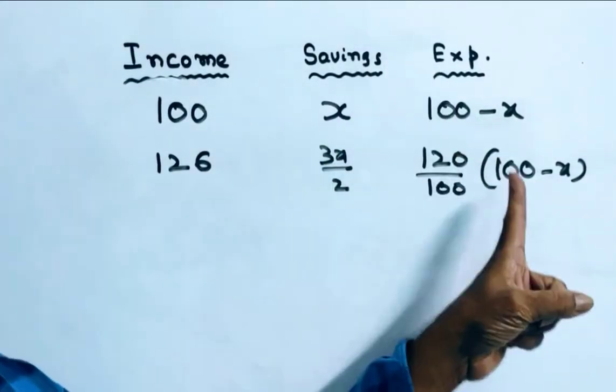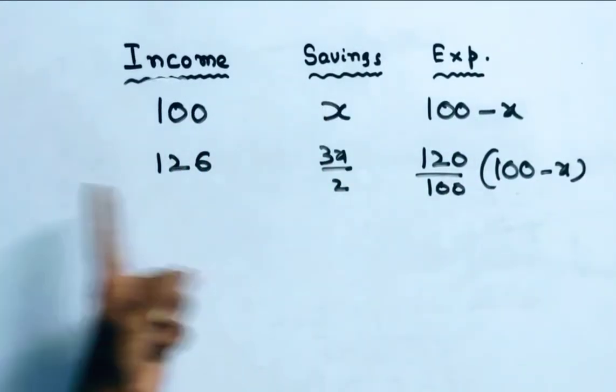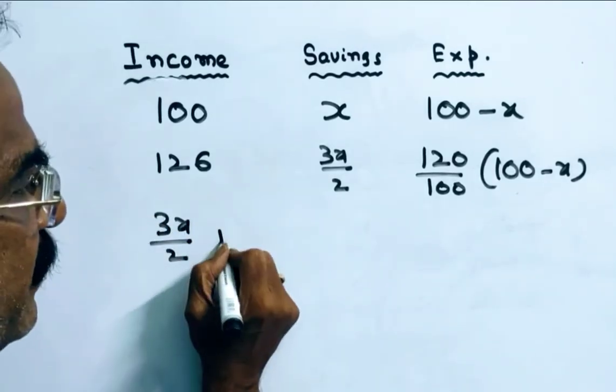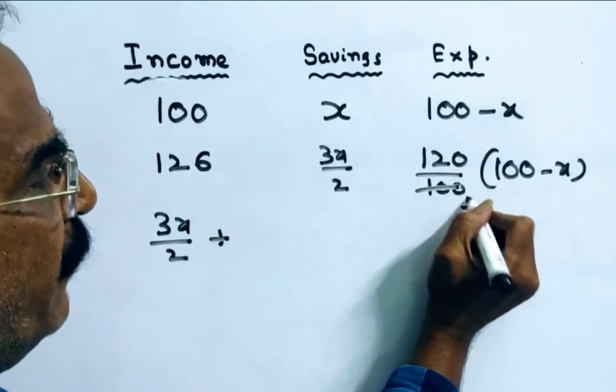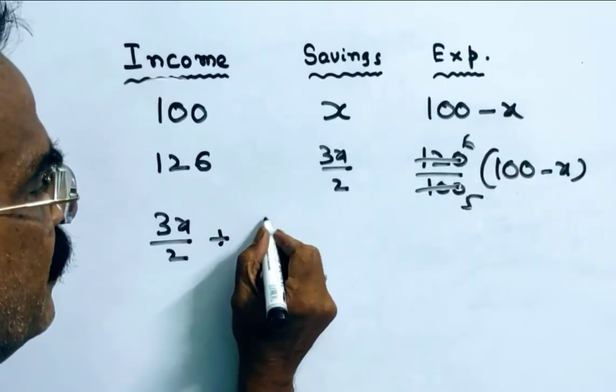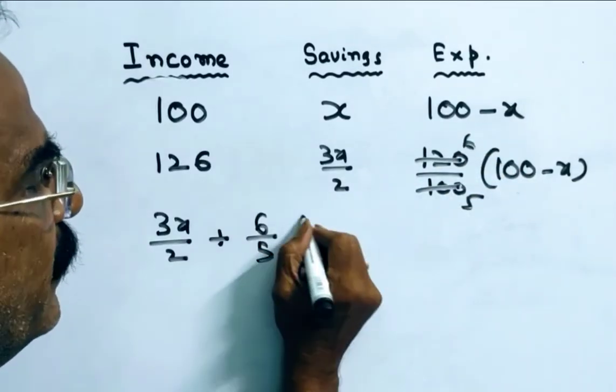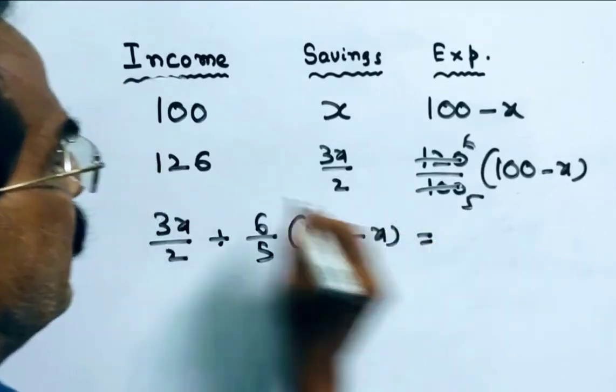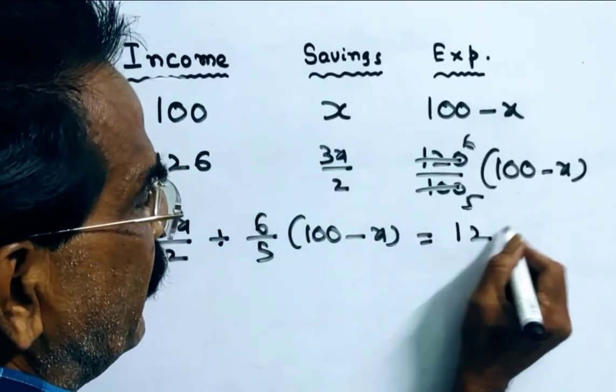Friends, now savings plus expenditure is equal to income. So, savings plus expenditure, 6 by 5 into 100 minus X is equal to his income. That means, that is 126.